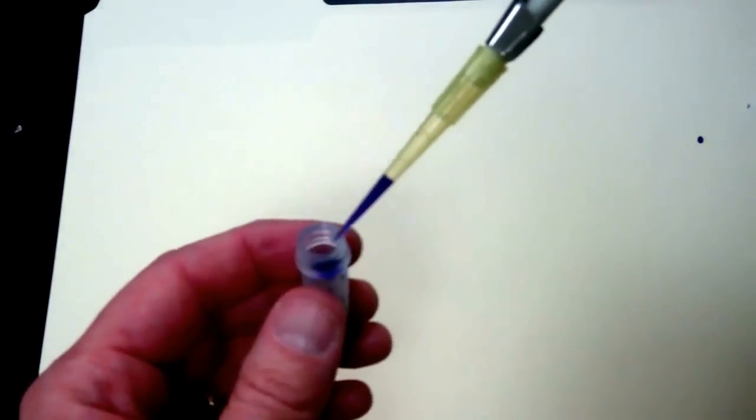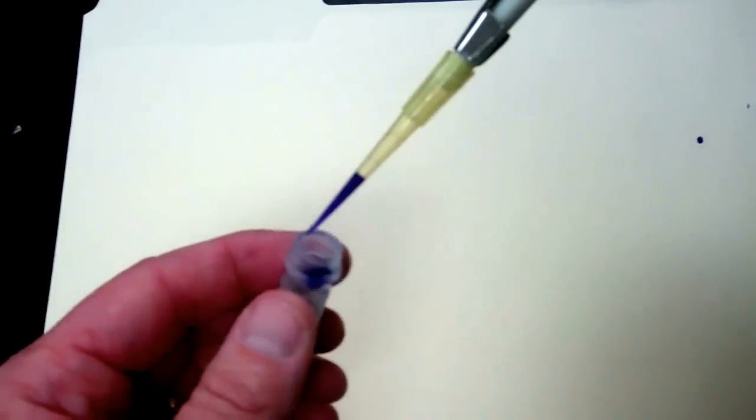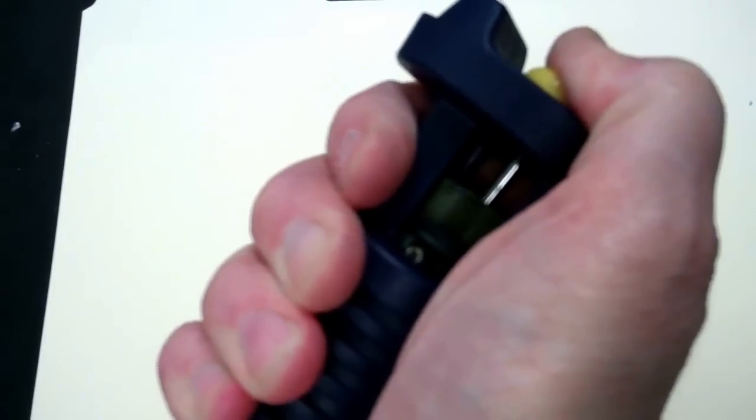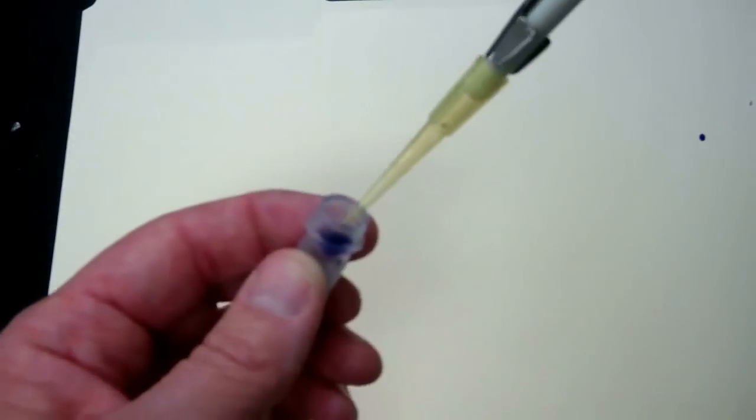What you want to do then is practice dispensing it back into your micro test tube. So to do that, you simply put the tip into the mouth of the test tube and then gently press your button. You can go to the first stop and the second stop, and you should have dispensed all the liquid. I see a tiny drop; that seems to be okay.